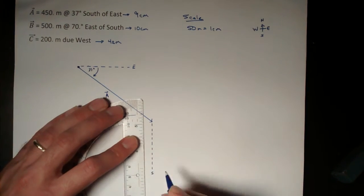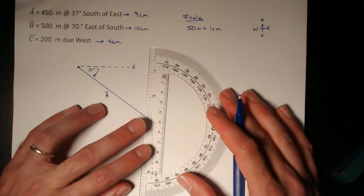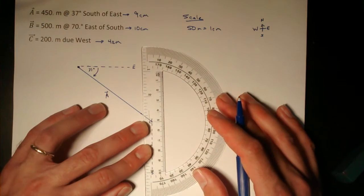So this heads south. I put the hole from my protractor right on the head of my last vector and 0 degrees right on south.